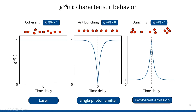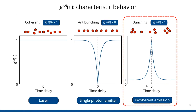Anti-bunching is very interesting to study in cathodoluminescence because single photon sources are intrinsically very small spatially, and it's very nice to access that length scale with the electron beam. The third behavior is bunching, where photons are lumped together in time — the likelihood of measuring two photons simultaneously is higher than at larger delays. This is characteristic for incoherent emission. In CL, you can also see this bunching behavior, and as it turns out, it is a very useful thing to look at in cathodoluminescence.